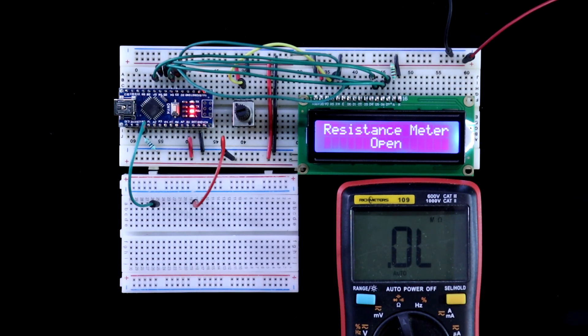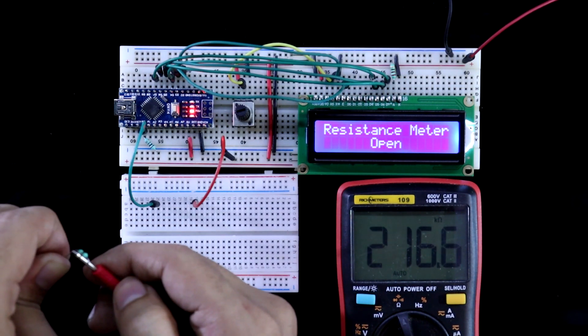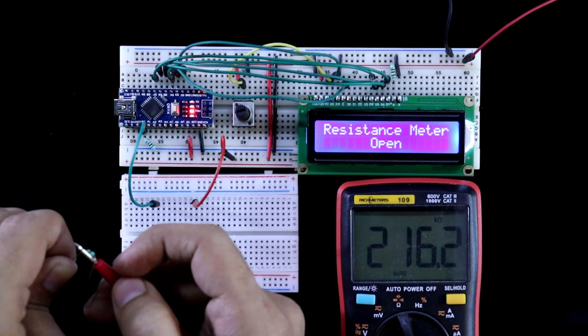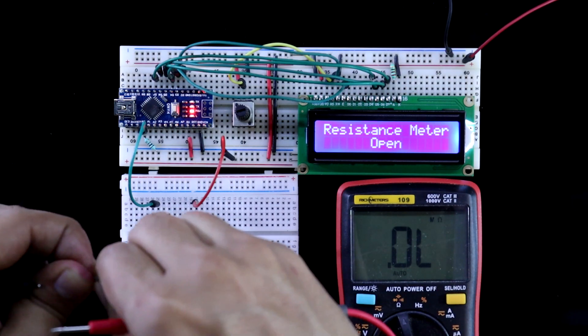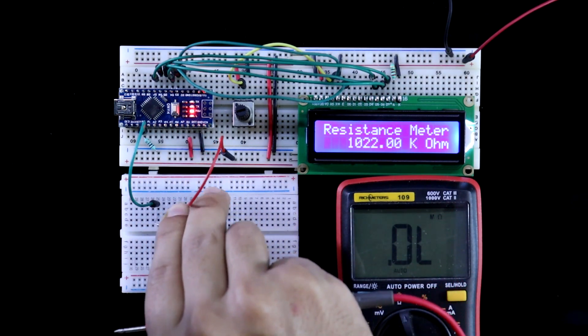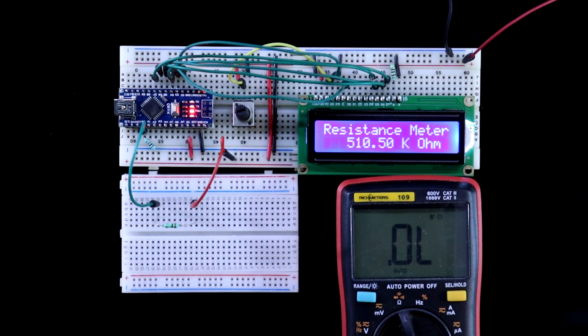And if you measure 220 kilo ohms resistor, I am measuring the value and it is showing 216 kilo ohms. And with this, it is a bigger value, 510 kilo ohms. It is definitely error. It cannot measure above 100 kilo ohms resistance. It is suitable for lower value.